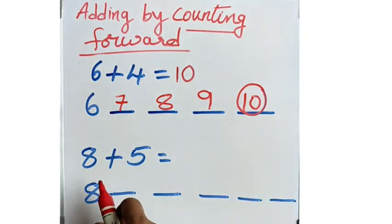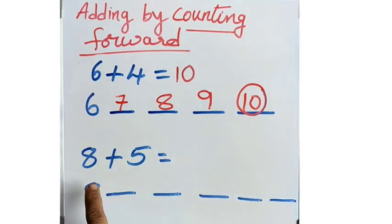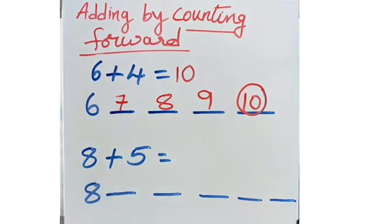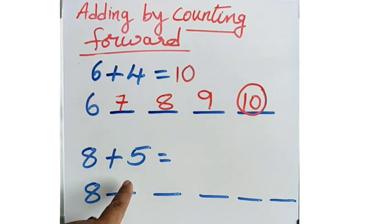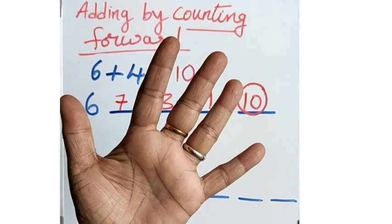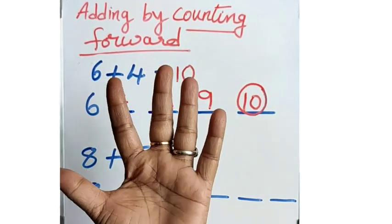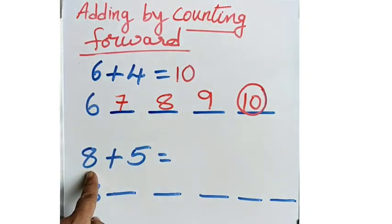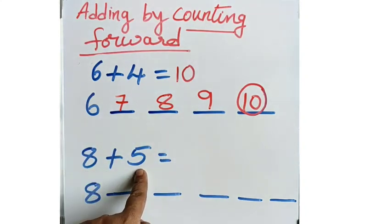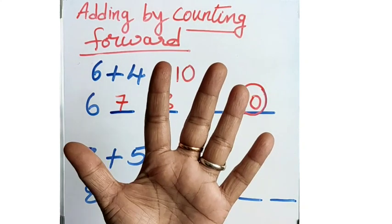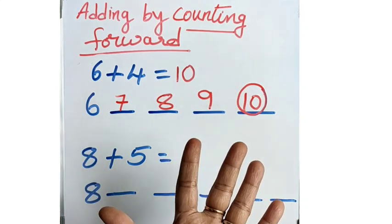Let us do the next sum: 8 plus 5. After 8, how many numbers do you have to count forward? You have to count 5 numbers forward. This is the second method — open 5 fingers. First number is 8, second number is 5, so open that many fingers.